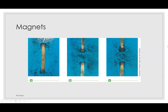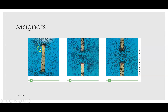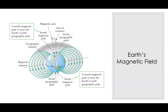We can see the patterns produced by magnetic fields by placing small iron filings around magnets. The left-hand figure shows a single bar magnet. The middle figure shows two bar magnets with unlike poles — north and south facing each other. The right-hand figure shows the interaction of like poles — north with north, or south with south.